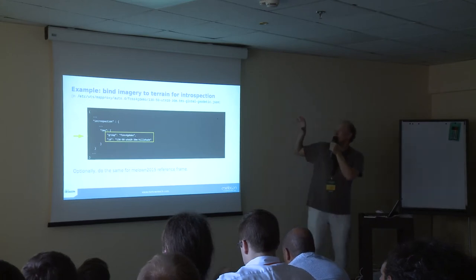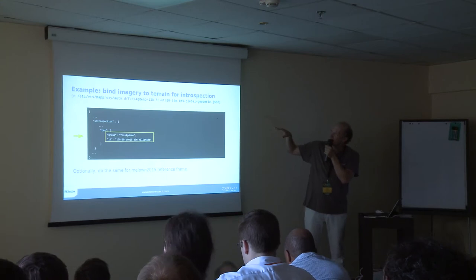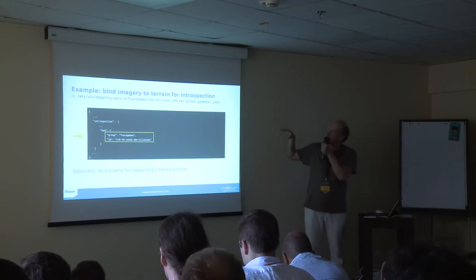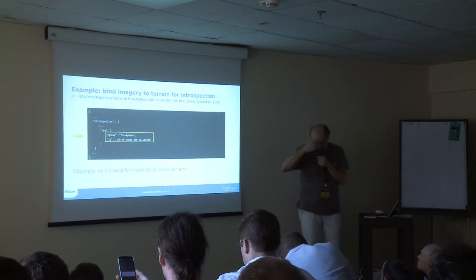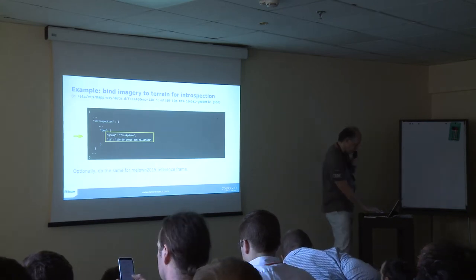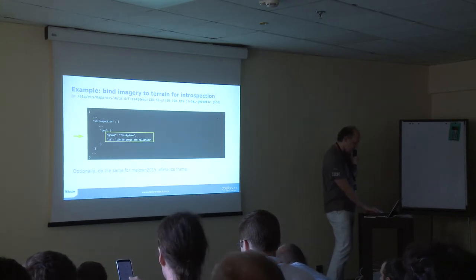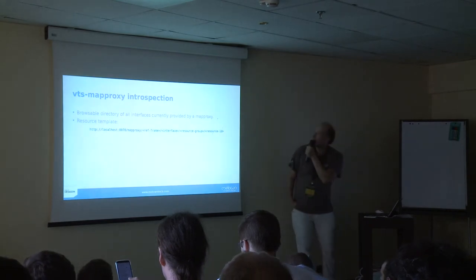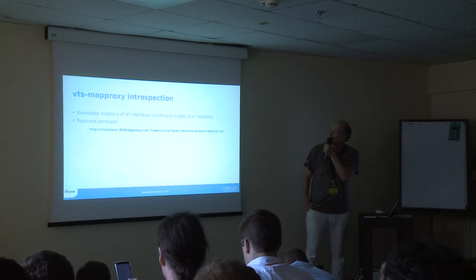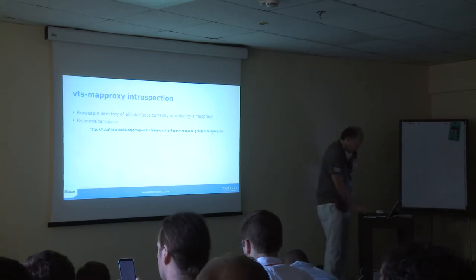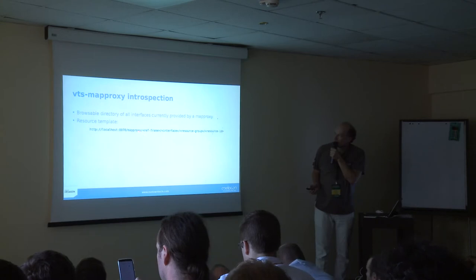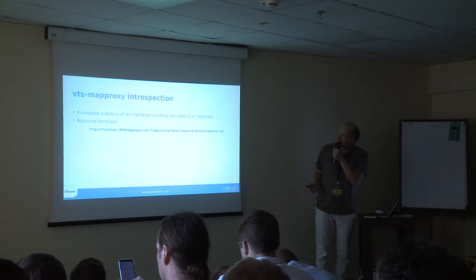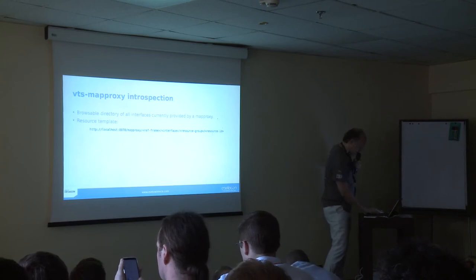We'll be looking at the introspection API in VDS MapProxy. To get a nice introspection web application, you bind the imagery resources to the terrain resources — done with two lines in the resource configuration files. And we're done. What we get is a browsable directory of all interfaces currently provided by MapProxy. You point your browser to localhost, go to MapProxy, fill in the reference frame, the interface, and the two IDs used when running MapProxy SetupResource.